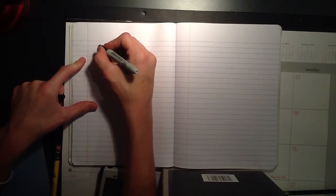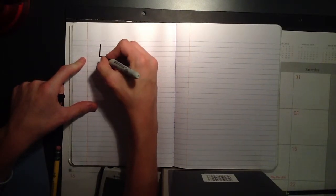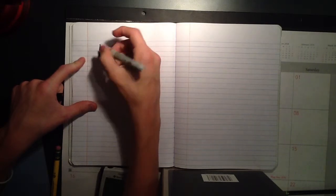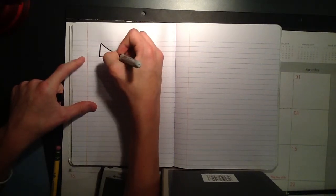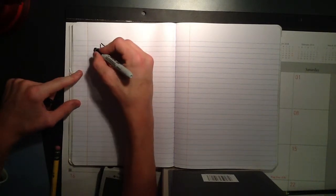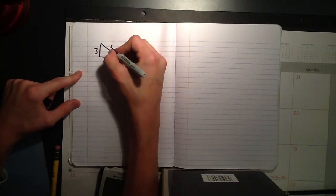Okay. So, let's say we have a right triangle. And, I'm going to use, I believe, the lowest Pythagorean triple here. Which happens to be three, four, five.